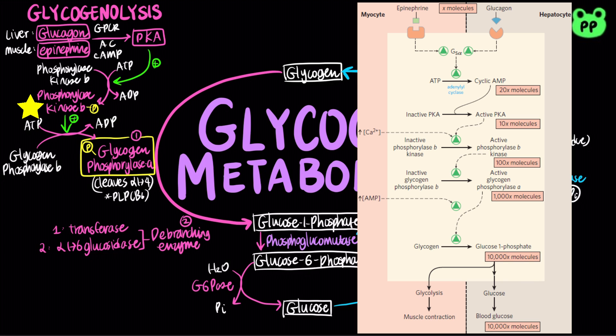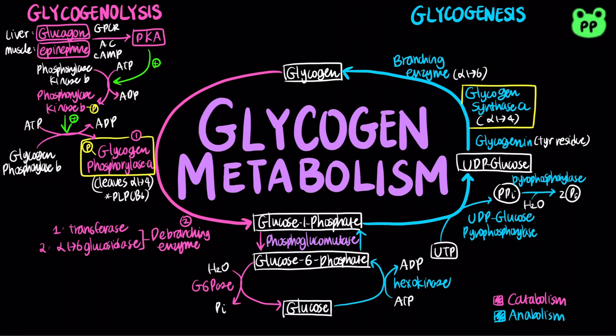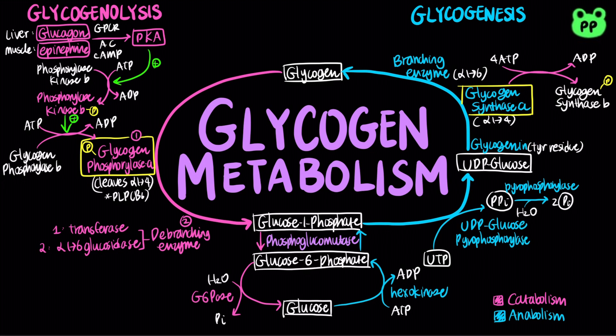Both phosphorylase kinase B and glycogen phosphorylase are activated by phosphorylation. However, glycogen synthase A is inactivated by phosphorylation.